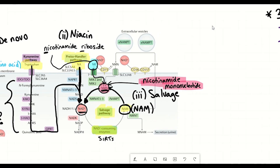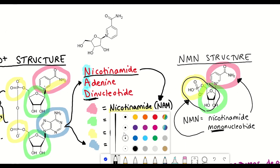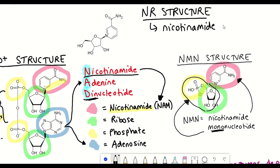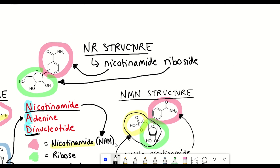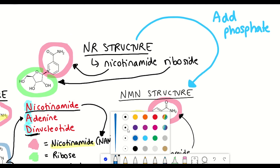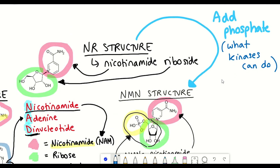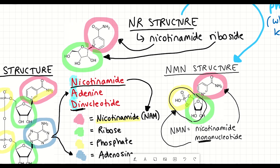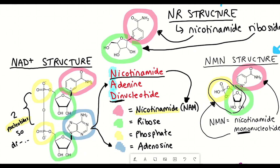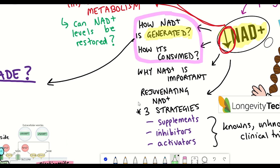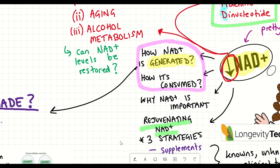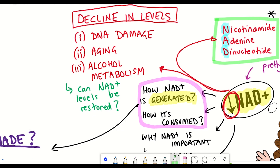Looking at the structures again: NR — nicotinamide riboside — has just nicotinamide and ribose. To get from NR to NMN, it needs to be phosphorylated, and kinases have been identified that can carry out this conversion. I've gone into quite a bit of detail here to really explain how NAD+ can be generated within a cell, because we'll come back to it later when we discuss different methods for rejuvenating NAD+ levels.